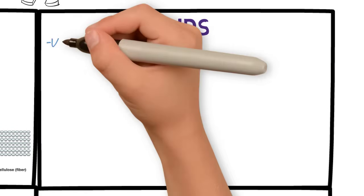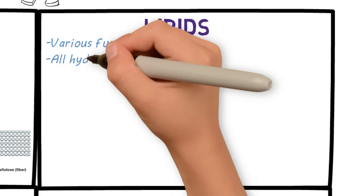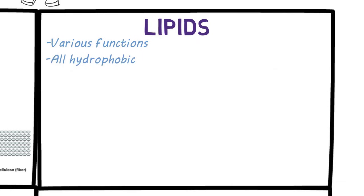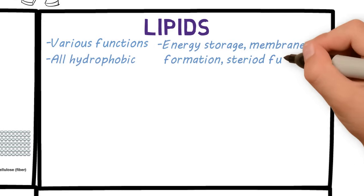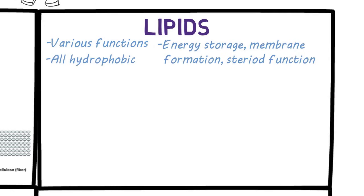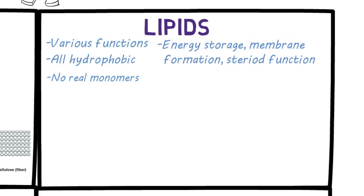Moving on to lipids. Lipids have a variety of functions in living organisms, and there's a lot of things lumped into the category of lipids because they're all hydrophobic. Some functions include energy storage, cell membrane formation, and steroid function. They have no real monomers.